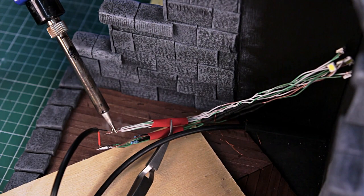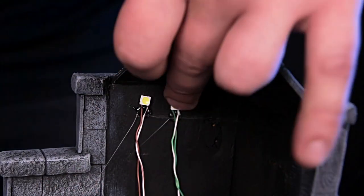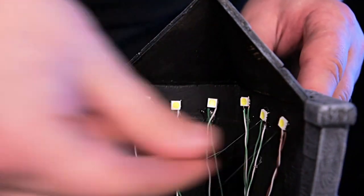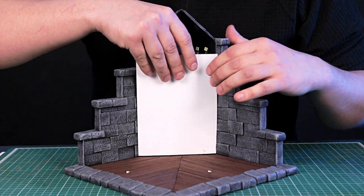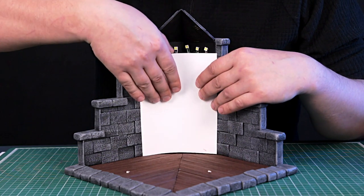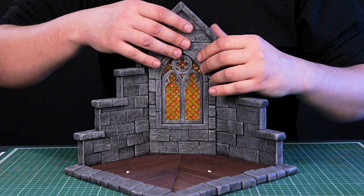I solder the wires and glue the LEDs with hot glue. A white sheet of paper will reflect the light into the window and hide the wires. The main part is ready.